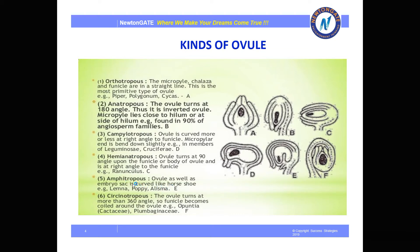Next is the amphitropous ovule, where both the ovule and the embryo sac are curved like a horseshoe shape. It is found in poppy, Lemna, etc. Next is the circinotropous ovule, where the ovule turns at more than 360 degrees so the funicle becomes coiled around the ovule. Examples include Opuntia and Plumbaginaceae.